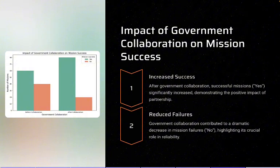This bar chart illustrates the impact of government collaboration on mission success. Before collaboration, success rates were lower and failure rates were higher. After collaboration, successful missions increased significantly while failures decreased. This highlights the critical role of public and private partnerships in providing resources, regulatory guidance, and advanced technology for better outcomes.